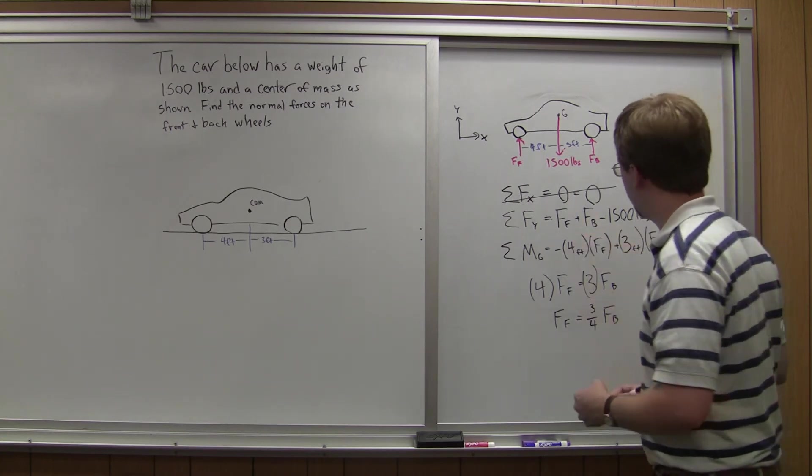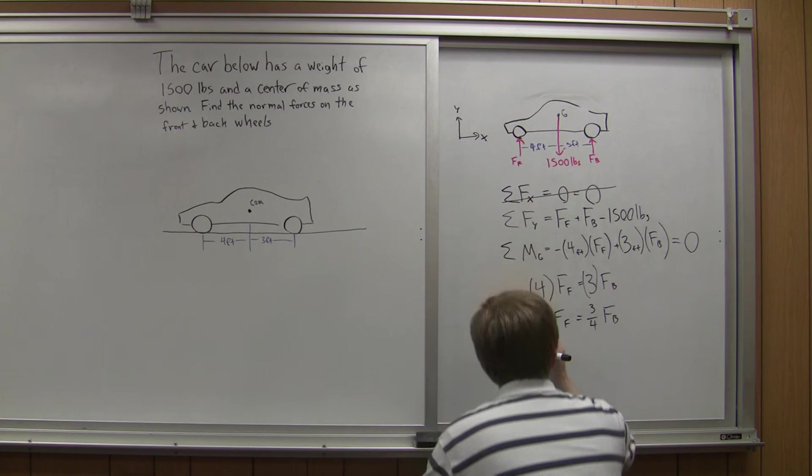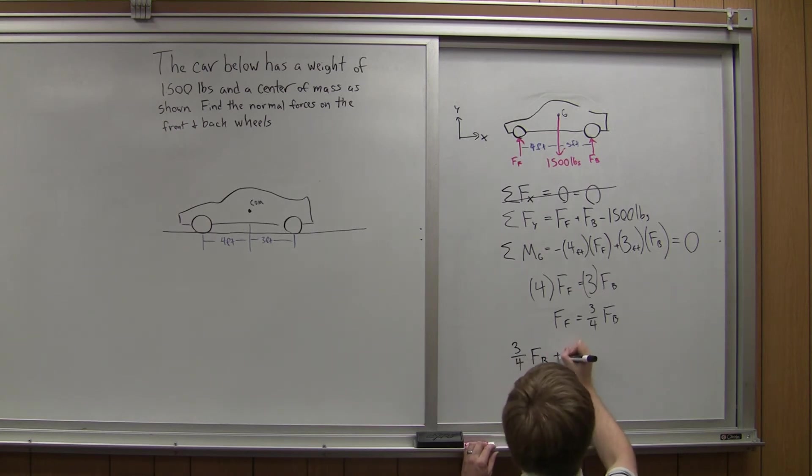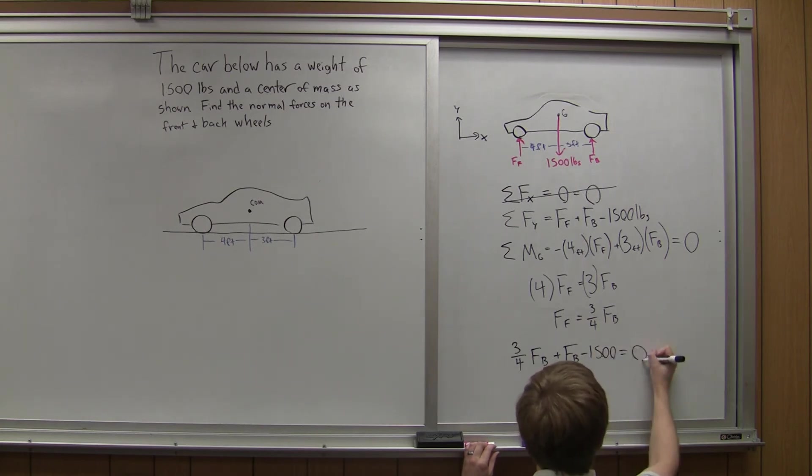So rather than Ff plus Fb, I'm going to do 3 quarters Fb minus 1,500 will be equal to 0.